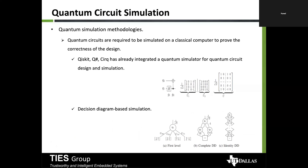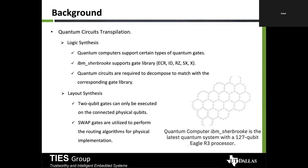Quantum circuit simulation is one of the biggest problems. Right now, quantum computers are not ready — for example, if you want to simulate on a thousand-qubit machine, you don't have one to run your program. You can use classical simulation approaches or decision-diagram-based simulation, which is more formal but not scalable due to state-space explosion. Two important areas without proper classical analogy are logic synthesis and layout synthesis.